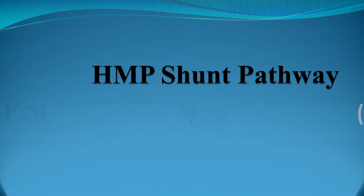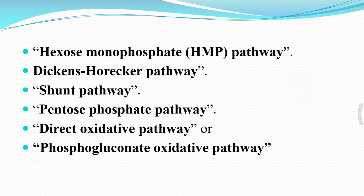Good morning to everyone. Today we will discuss the HMP shunt pathway, also known as the hexose monophosphate shunt pathway. This is an alternative pathway for oxidation of glucose molecules. Other names include: the hexose monophosphate pathway, Dickens-Horecker pathway, shunt pathway, pentose phosphate pathway, direct oxidative pathway, or phosphogluconate oxidative pathway.